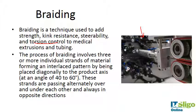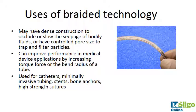The process of braiding involves three or more individual strands of material forming an interlaced pattern by being placed diagonally to the product axis at an angle of about 40 to 60 degrees. The strands pass alternately over and under each other, always in opposite directions. The end result, as you can see here, is a braided tube.